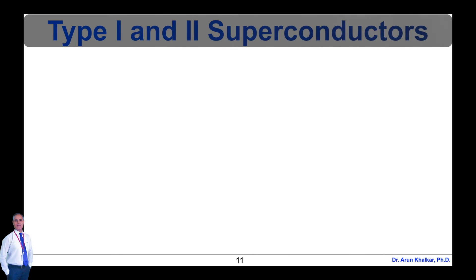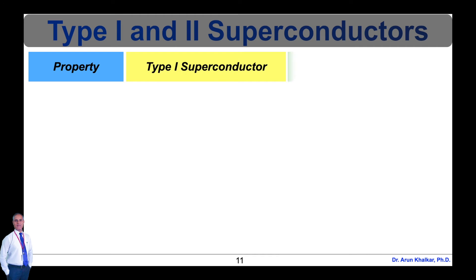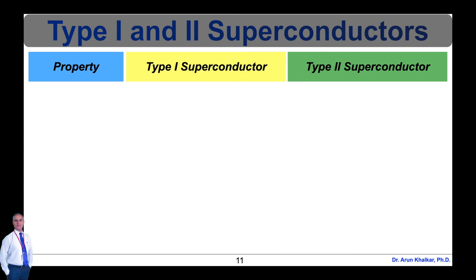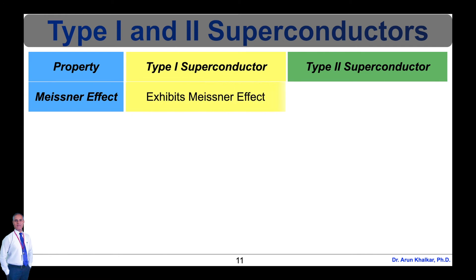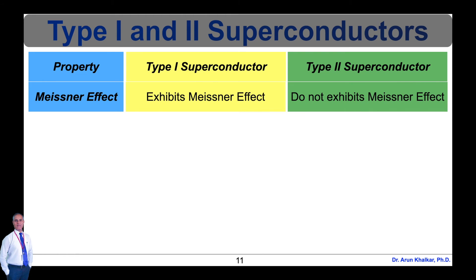Now let's see the comparison between type 1 and type 2 superconductors. First property: Meissner effect. In type 1, they exhibit the complete Meissner effect, whereas in type 2, they do not exhibit the Meissner effect completely.